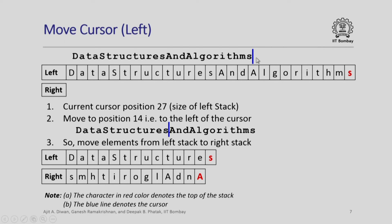Suppose I want to move the cursor to the left. The cursor is currently at the end after the last operation and the current cursor position is 27, which is the size of the left stack. There is nothing on the right stack. Suppose I want to move it to position 14 — that means I want to move my cursor to the position after 'data structure'. I move the elements from the left stack to the right stack. Look at how the left and right stacks will look: 'data structures' is on the left, and 'algorithms' is pushed onto the right stack in reverse order. So I now have the cursor at position 14.